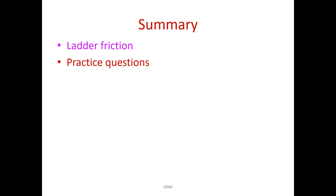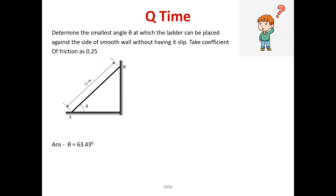In this lecture we have seen ladder friction and solved practice questions on ladder friction. Now it is time to check your understanding. Determine the smallest angle theta — measured from horizontal — at which a ladder can be placed against a smooth wall without slipping, given coefficient of static friction of 0.25 at the floor. The answer is theta equals 63.43 degrees. Thank you.